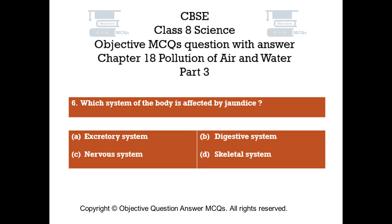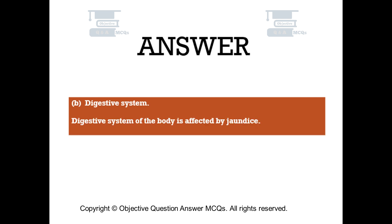Question number 6: Which system of the body is affected by jaundice? Option A: excretory system, Option B: digestive system, Option C: nervous system, Option D: skeletal system. The right answer is Option B: digestive system. The digestive system of the body is affected by jaundice.